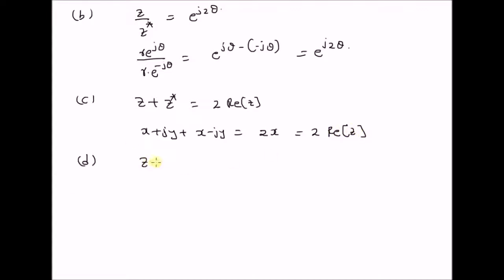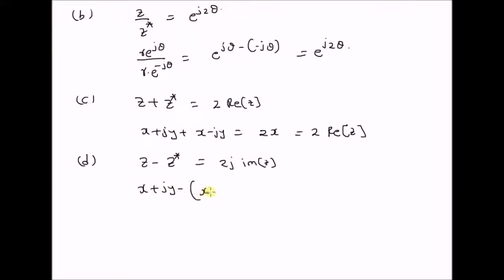The next property is that the difference between complex number z and its conjugate z star should be equal to 2j times the imaginary component of the complex number z. The LHS is x plus jy minus of x minus jy, which is clearly equal to 2j into y, and y is the imaginary component of z. So this is equal to 2j times the imaginary component of z.